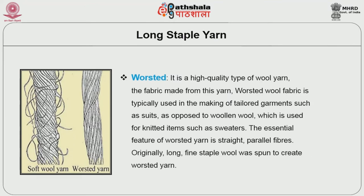The next yarn is worsted long staple yarn. Worsted is a high quality type of wool yarn. The fabric made from this yarn is called worsted wool fabric, typically used in making tailored garments such as suits, as opposed to woolen yarn which is used for knitted items such as sweaters. The essential feature of worsted yarn is straight, parallel fibers. Originally, long fine staple wool was spun to create worsted yarn.